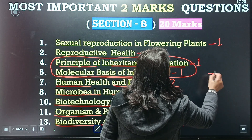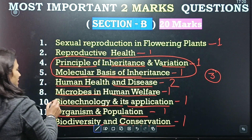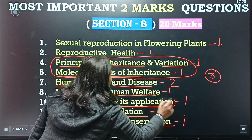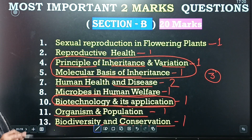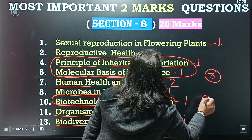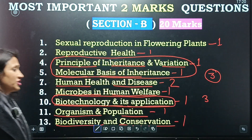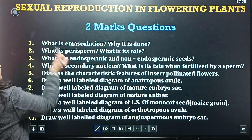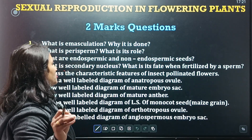These chapters will also come from Section C — and another chapter is Biotechnology and its Applications, which will also come from Section C carrying 3 marks. Note that these questions carry two marks, but the examiner can ask one-mark questions from them as well.